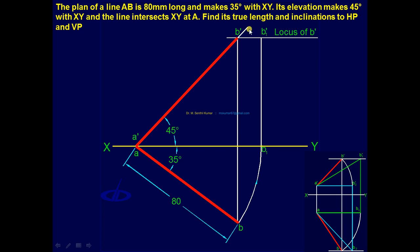Draw locus. That way you will be getting the B1 dash line. Draw line joining A dash B1 dash. That is the preliminary front view line. Measure this and its angle is theta. So true length is 103 and true angle theta is 39 degrees.